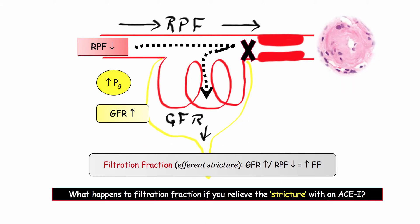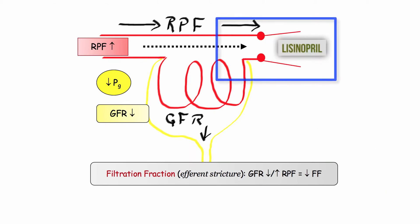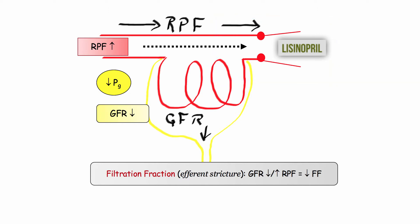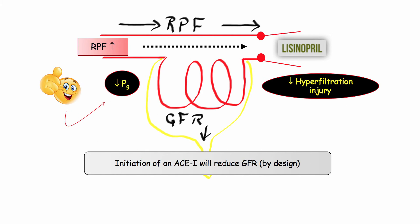What would happen to the filtration fraction if we relieve that obstruction through the administration of an ACE inhibitor? Lisinopril, the ACE inhibitor, causes efferent arteriole vasodilation. Renal plasma flow increases due to decreased vascular resistance, while intraglomerular pressure decreases. The result is a reduction in the filtration fraction. And whereas an ACE inhibitor will reduce GFR, this is a desirable outcome — we are trading off that reduction in GFR in exchange for decreased glomerular pressures, thereby reducing hyperfiltration injury. That tradeoff is beneficial in the long run.